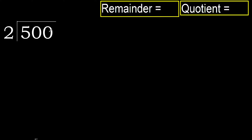500 divided by 2. 5 is not less, therefore with 5. 2 multiplied by which number is nearest to 5, but not greater.